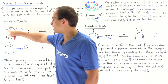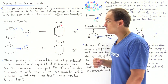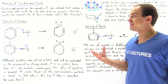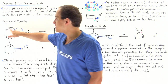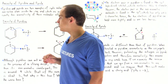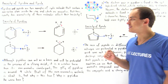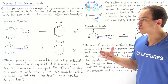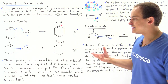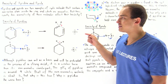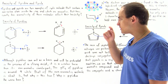Six of these electrons are found in the pi bonding system. This lone pair of electrons is actually not found in the pi system, but rather in the sigma bonding system — it's found in the sp2 hybridized orbital.